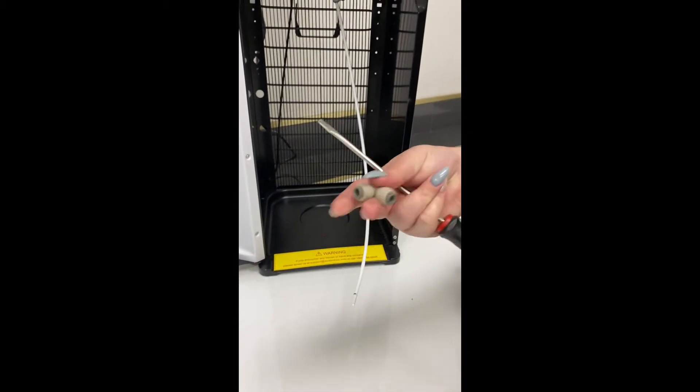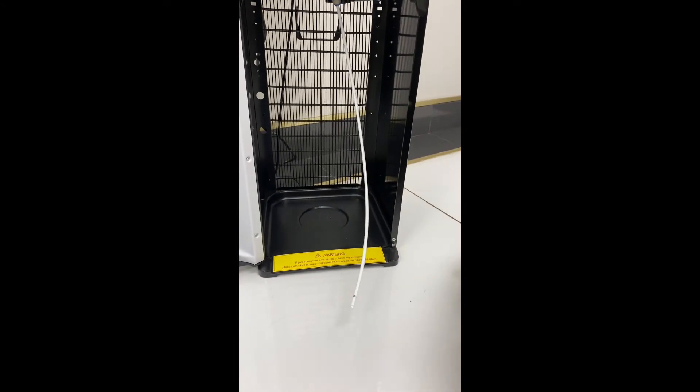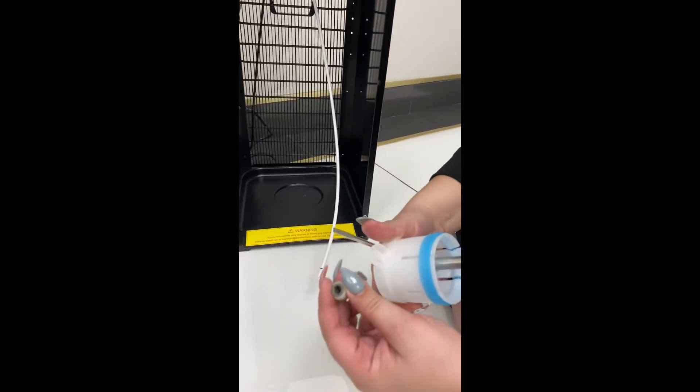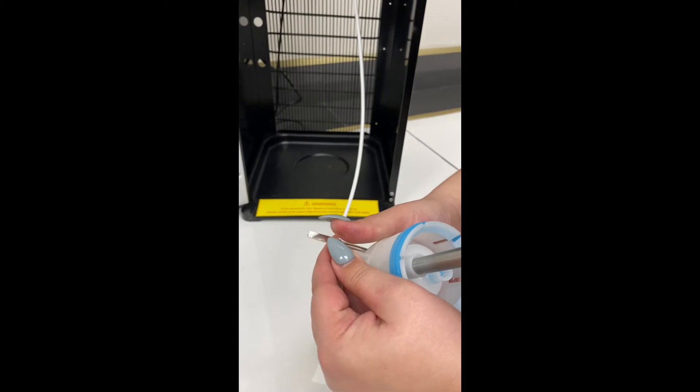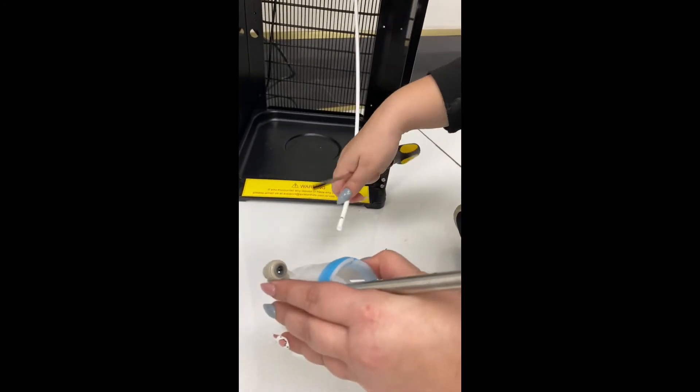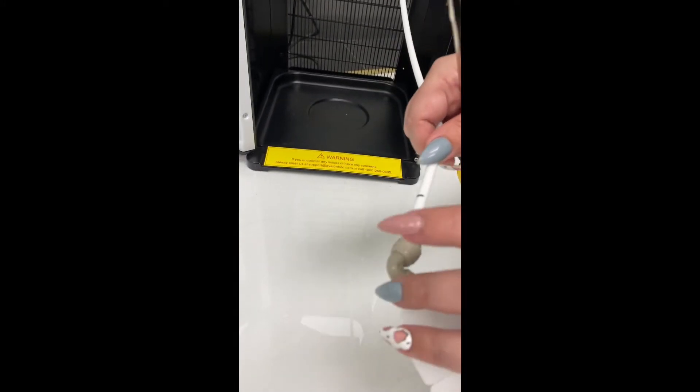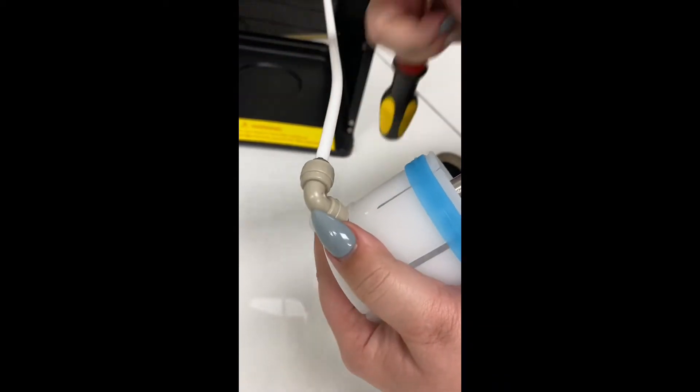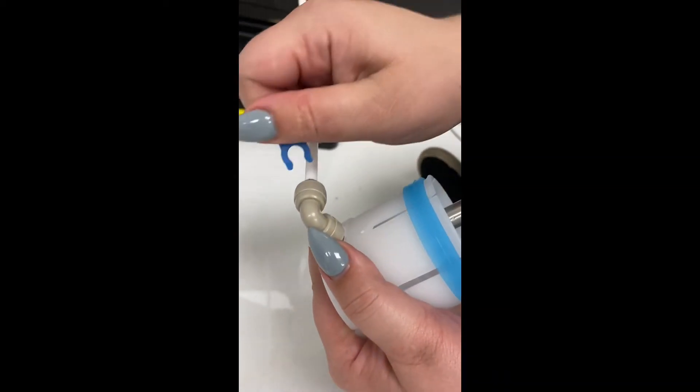Now we can go ahead and grab our new elbow connection that we have over here to the side, and push this into place. Push the white tube on so it locks in, and reattach the blue clips into place.